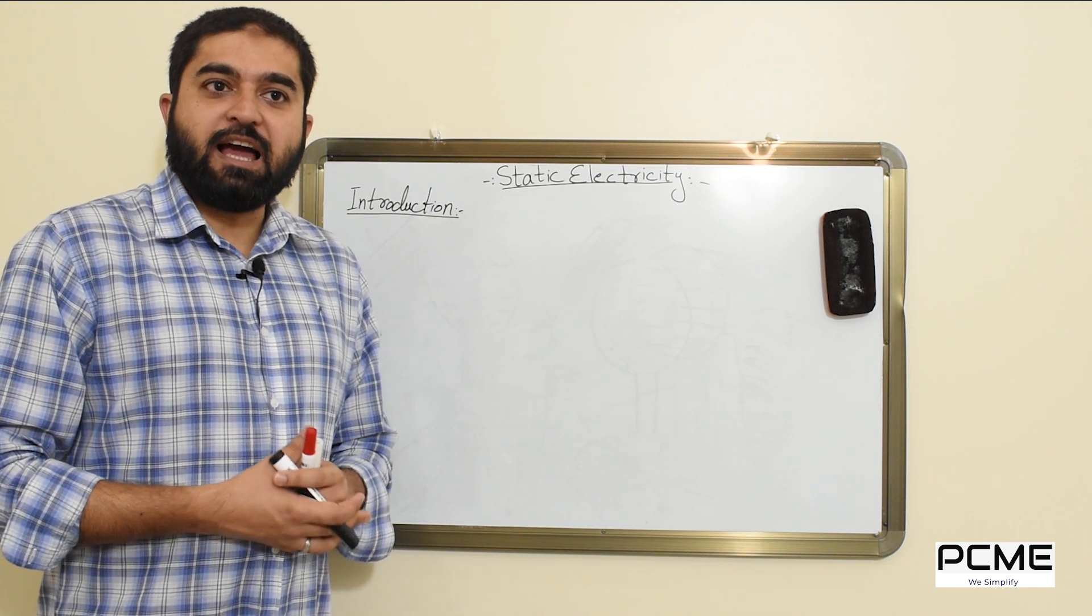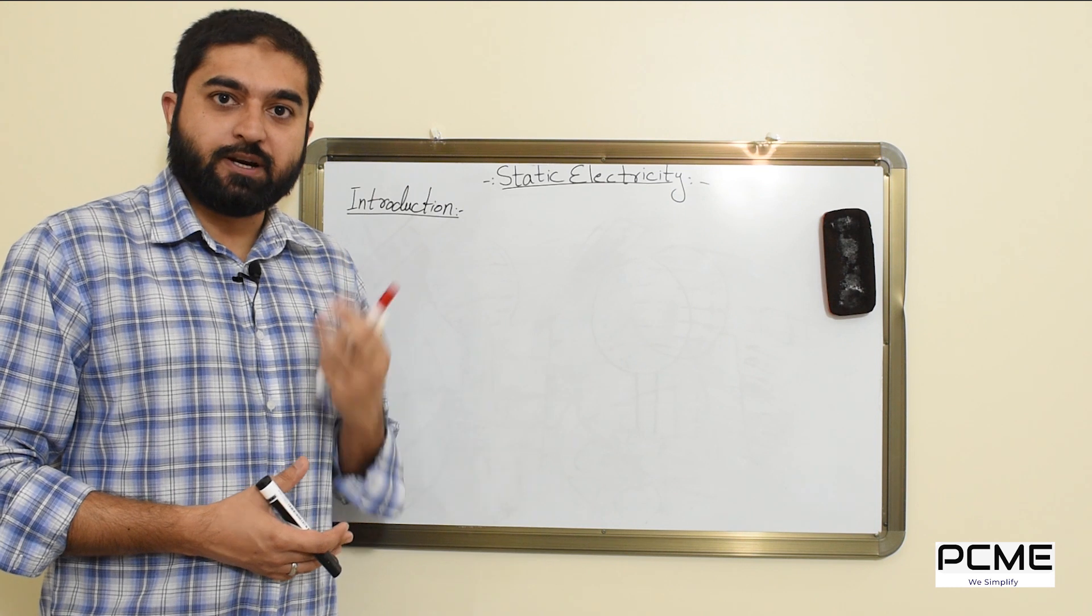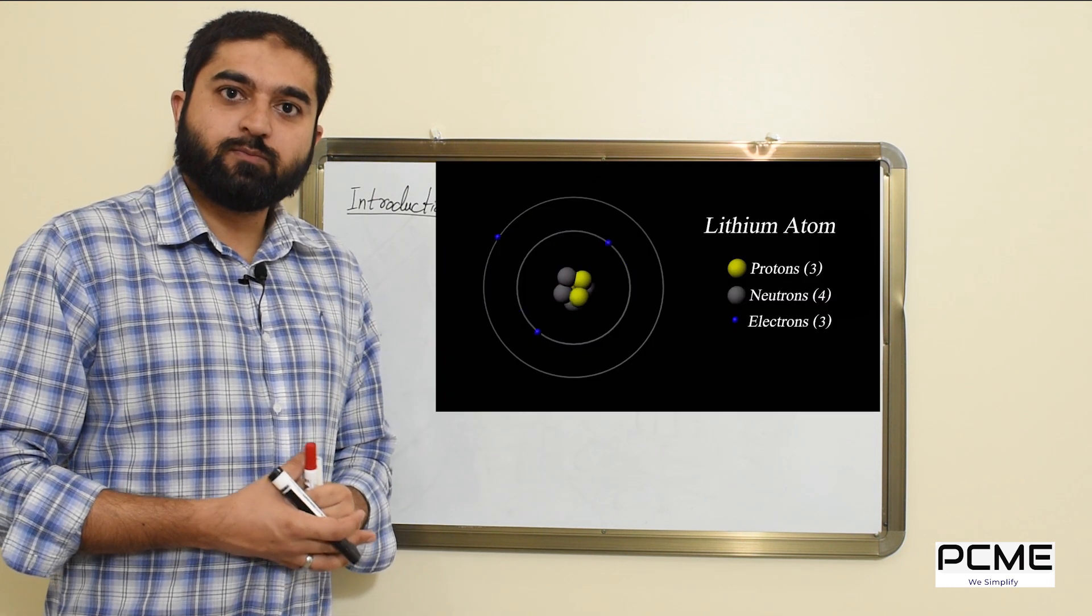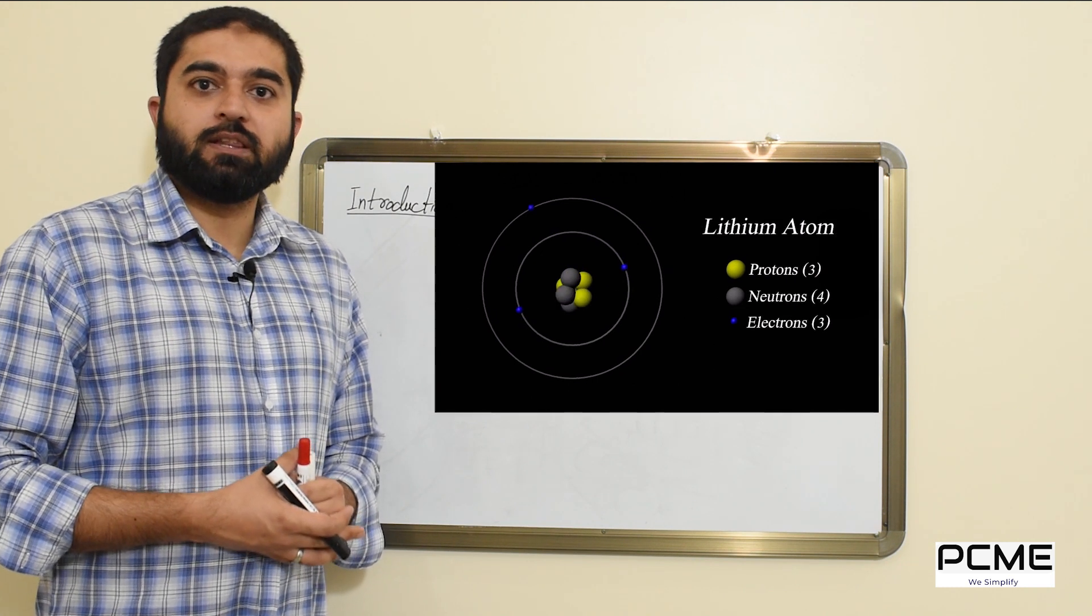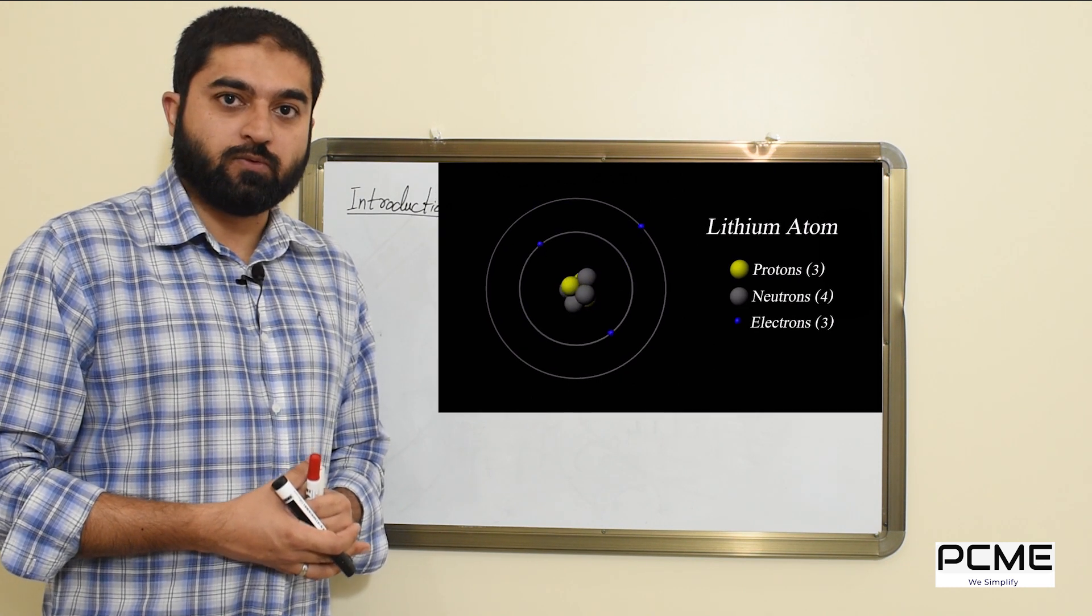Do you know that an atom is made up of three fundamental particles: electrons, protons and neutrons. Protons and neutrons are in the nucleus while the electrons are revolving around the nucleus.